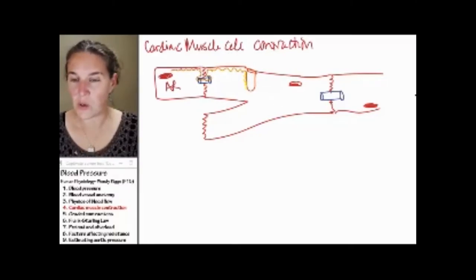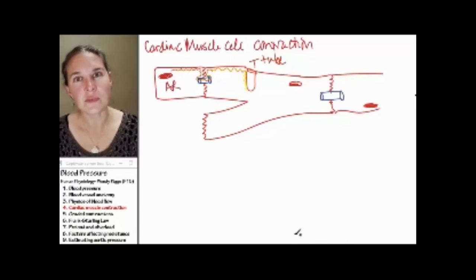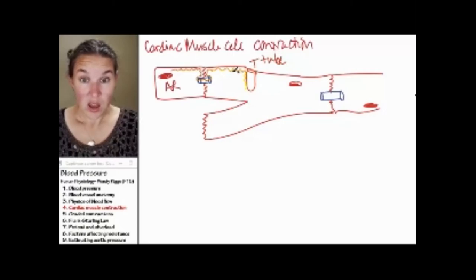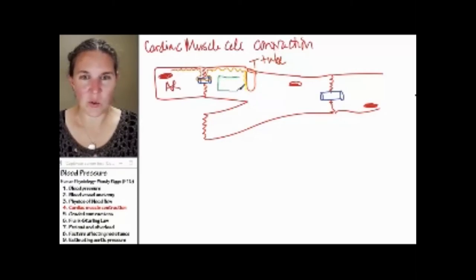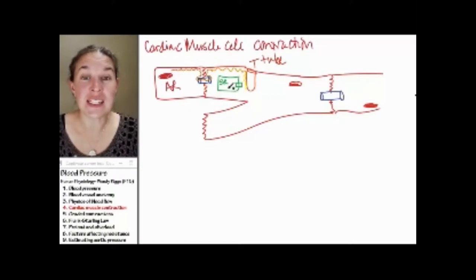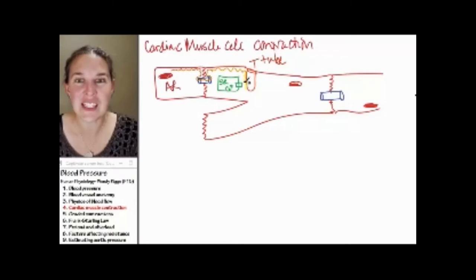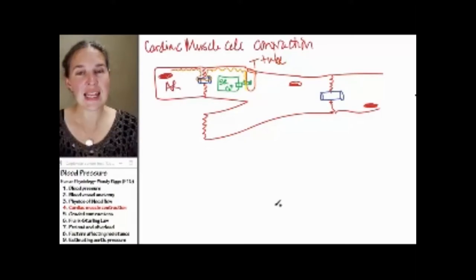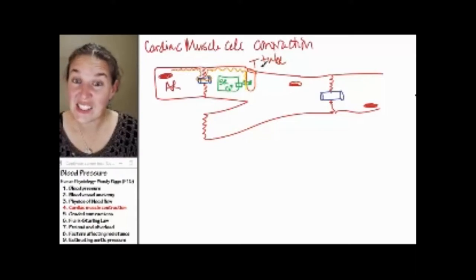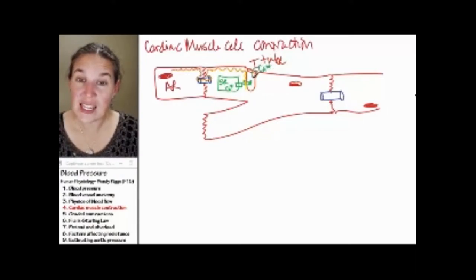This T-tubule is similar to what you would see in skeletal muscle. If you had to guess what's going to happen when the action potential travels down the T-tubule — are you going to guess that my sarcoplasmic reticulum, found inside the cardiac muscle cell, has calcium inside? But guess what else? There are specific channels in the T-tubule — this is a slightly different mechanism — that allow extracellular calcium to rush in through the channel.